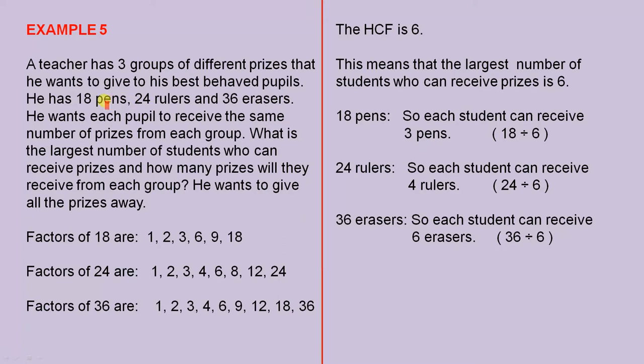So the three numbers are 18, 24, and 36, representing pens, rulers, and erasers respectively. These are the factors of those three numbers. Now, have a notice here, there, there, and there. So 6 is the highest number that appears in all three groups. So the highest common factor is 6.